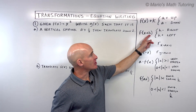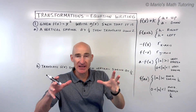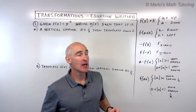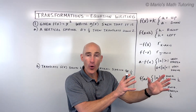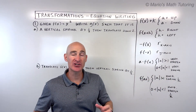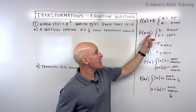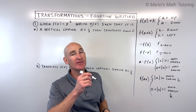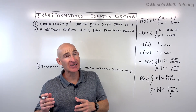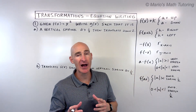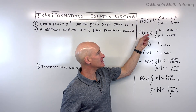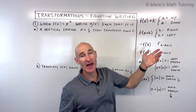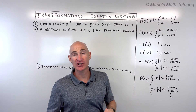Now when the h here is grouped with the x — like in the parentheses, or underneath the square root, or in the absolute value bars — when it's with the x, we know it's going to affect the horizontal direction, the x direction. But it has the opposite effect. If it's like x plus two, you're actually going to shift the graph left two. If it's x minus two, you're going to go right two. So it's a little counterintuitive. Grouped with the x affects the x coordinates or the horizontal direction; not grouped with the x affects the y direction in the same manner.